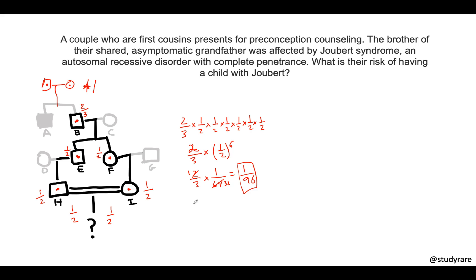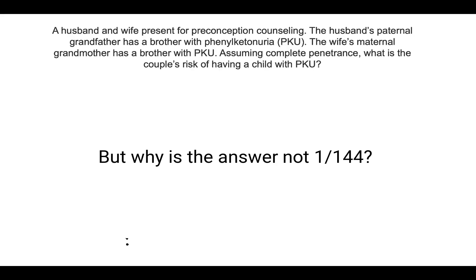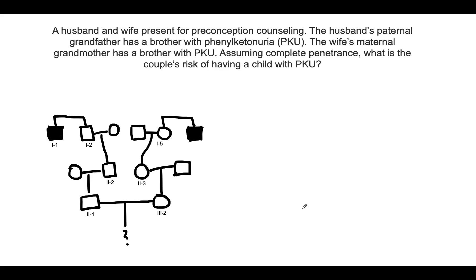This shortcut can be used on exams to calculate the probability that a child has a recessive disease when there is consanguinity. Some may ask why the answer isn't one over one-forty-four — I'll show a situation where one over one-forty-four would be correct. In this second scenario, a husband and wife present for preconception counseling. The husband's paternal grandfather has a brother with PKU, and the wife's maternal grandmother also has a brother with PKU. Assuming complete penetrance, what is this couple's risk of having a child with PKU? Crucially, in this case there is no consanguinity, which actually makes the problem easier.